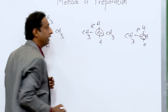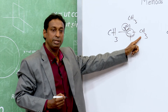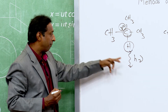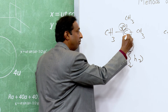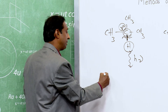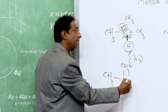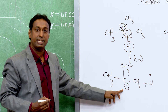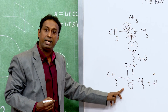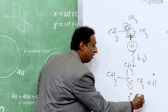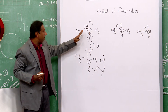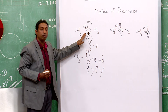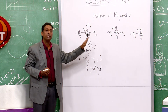A carbon attached to three other carbons is called a 3° carbon. Its C-H bond undergoes homolytic fission in the presence of sunlight to give a 3° free radical. A 3° free radical is the most stable — more stable than 2° free radical, which is more stable than 1° free radical. Therefore, a molecule with a 3° carbon will react faster in the presence of chlorine and sunlight.